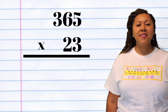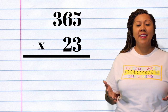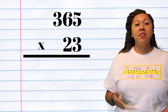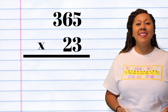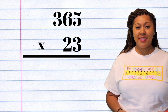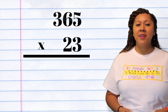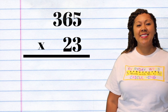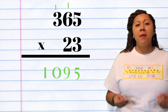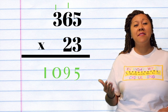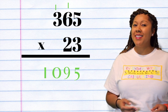I have the number 365 and I want to multiply it by 23. I am going to put the numbers in place value order form. So I have the number 365, which the 3 is in the hundreds place, the 6 is in the tens place, and the 5 is in the ones place, times 23. So I have my 3 that goes under the 5 in the ones place and my 2 which goes under the 6 in the tens place. The first thing I'm going to do is multiply my 3, which is in the ones place, times my 5, my 6, and my 3. So if I multiply my 3 times 5, I'm going to get 15.